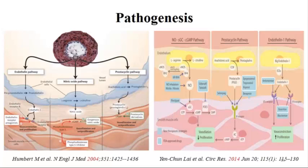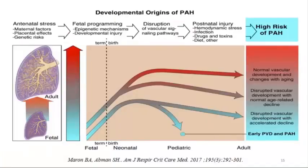That's the rationale behind the RESPITE study and the REPLACE study ongoing now. We never used to ask about prenatal history or history of preeclampsia, but you can have a hit at a young age, even prenatally, that translates into endothelial injury and more susceptibility to develop pulmonary hypertension later.